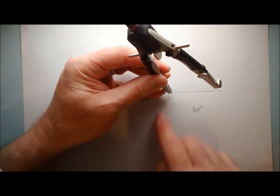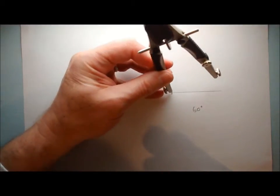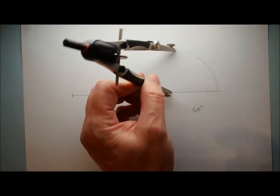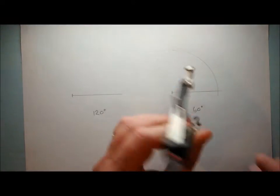So put my compasses on the end of the line, put my compass point here and then just create an arc going up like that. Now keeping that exactly the same,